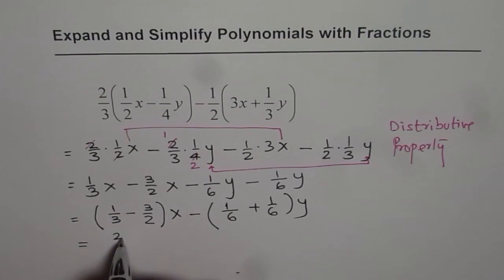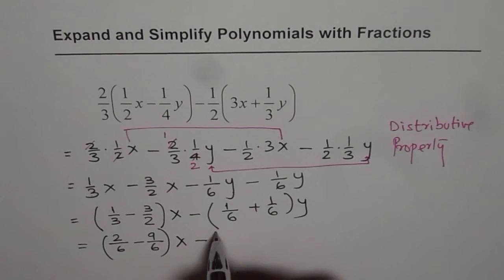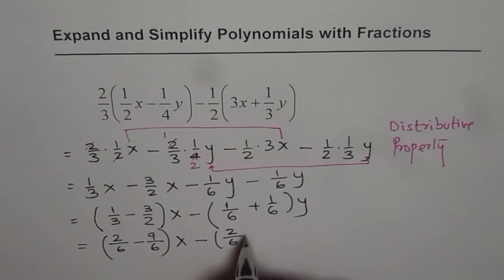So we have 2 over 6 minus 9 over 6, that is the x part. And in this case, 6 and 6 are the common denominators, numerator will be 2, so 2 over 6 for y.